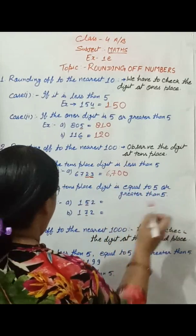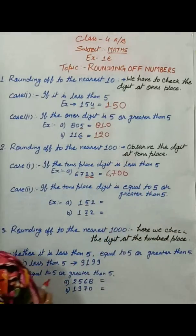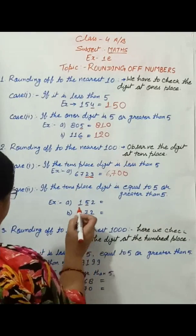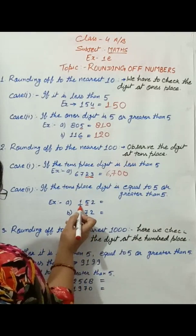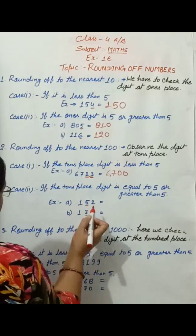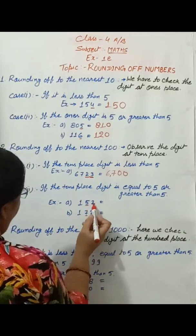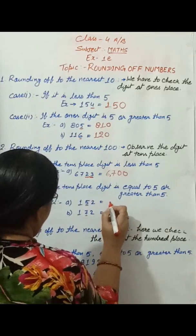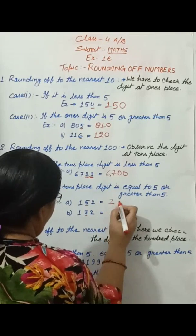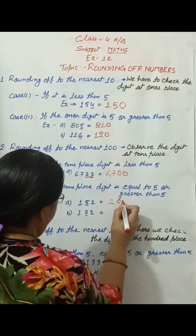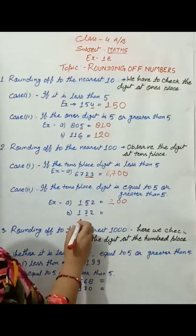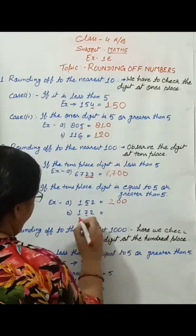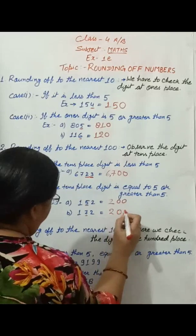If the tens place digit is equal to five or greater than five, then increase the hundreds place by one and replace the tens digit and ones digit by zero. For example, after rounding this becomes two hundred, and this also becomes two hundred.